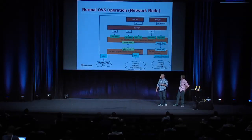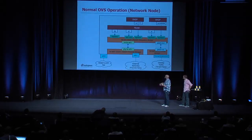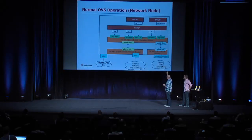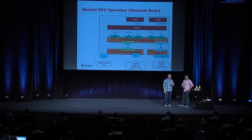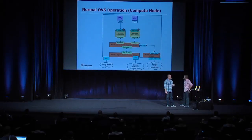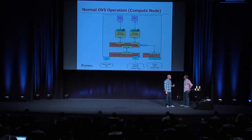What we have pictured here is a standard Open vSwitch network diagram for the network node. We've got DHCP and router namespaces, two different networks, all connected to the integration bridge, which is then connected to your provider bridge for VLAN traffic and your tunnel bridge for tunnel traffic. The compute node looks very similar. Your instances are connected to QBR Linux bridges to provide security group functionality, and those bridges are then cross-connected to the integration bridge, which is cross-connected to both the provider bridge and the tunnel bridge.